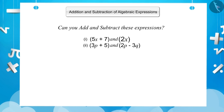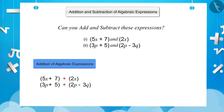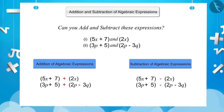For example: 5x plus 7 and 2x, and 3p plus 5q and 2p minus 3q. To understand these expressions, we must understand addition and subtraction of algebraic expressions.